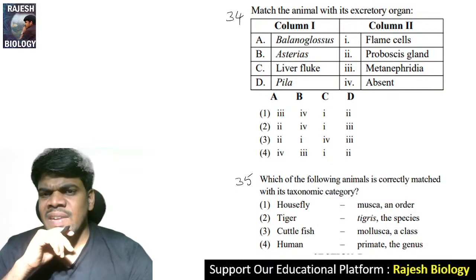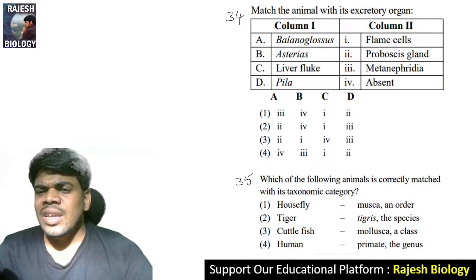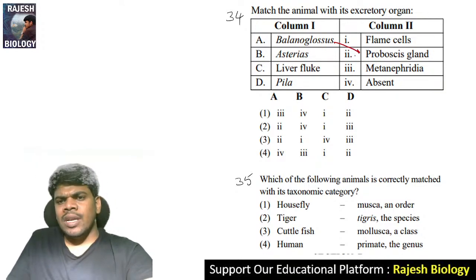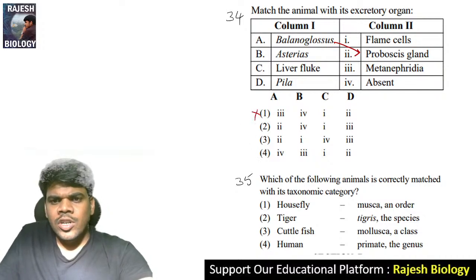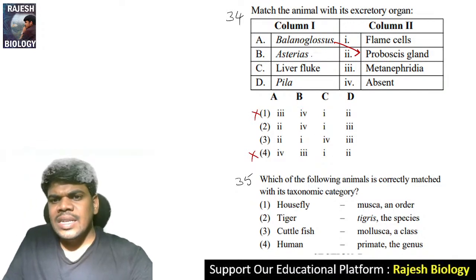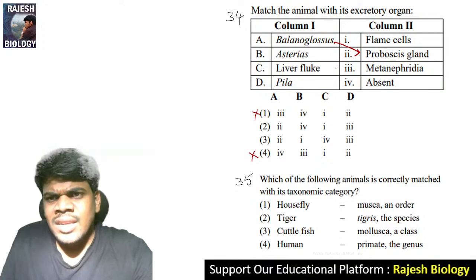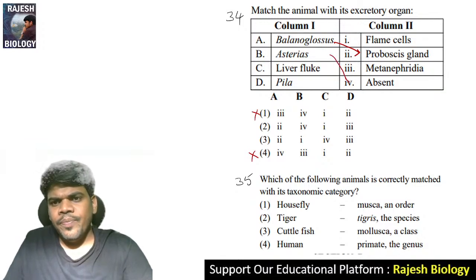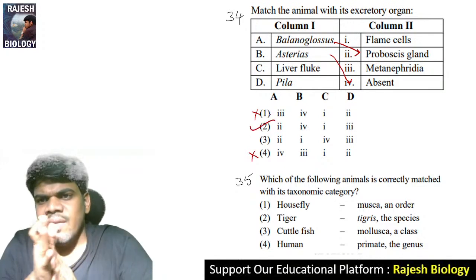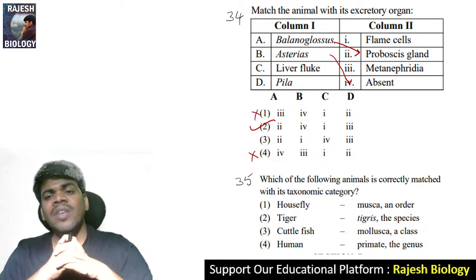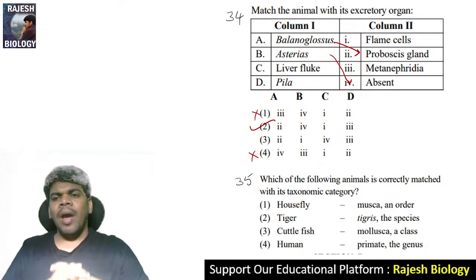Thirty-fourth question: match Balanoglossus, Asterias, liver fluke, and Pila with their excretory structures. Balanoglossus is from Hemichordata — excretory organ is proboscis gland, so A2. Asterias (starfish) has no excretory organs. Liver fluke is from Platyhelminthes — excretory organs are flame cells. Pila — metanephridium.